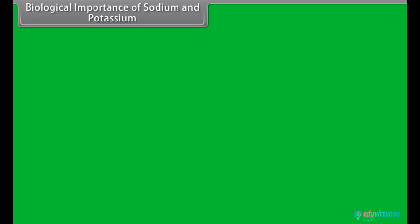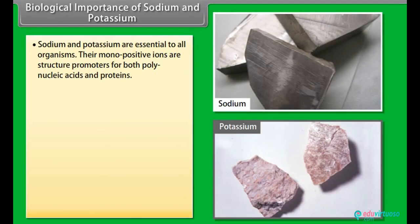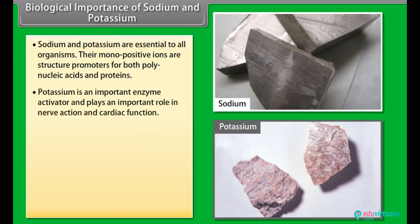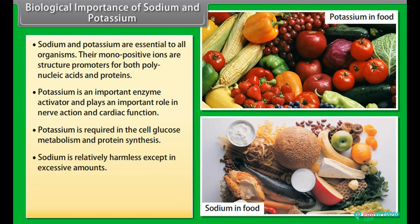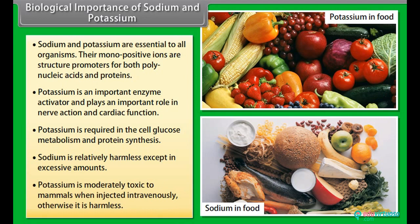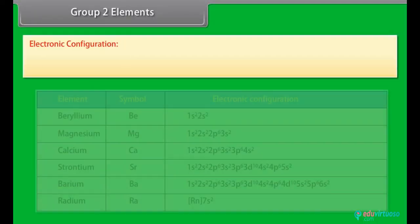Biological importance of sodium and potassium: Sodium and potassium are essential to all organisms. Their monopositive ions are structure promoters for both polynucleic acids and proteins. Potassium is an important enzyme activator and plays an important role in nerve action and cardiac function. Potassium is required in cell glucose metabolism and protein synthesis. Sodium is relatively harmless except in excessive amounts. Potassium is moderately toxic to mammals when injected intravenously, otherwise it is harmless.